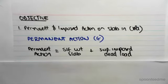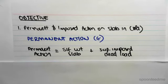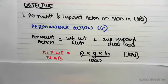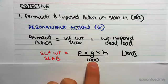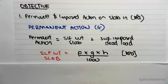The permanent action in the slab is going to be the self-weight in the slab plus the superimposed dead load. So the self-weight of the slab first is going to be the density times the gravity times its height divided by 1,000 to get an answer in kilopascals.